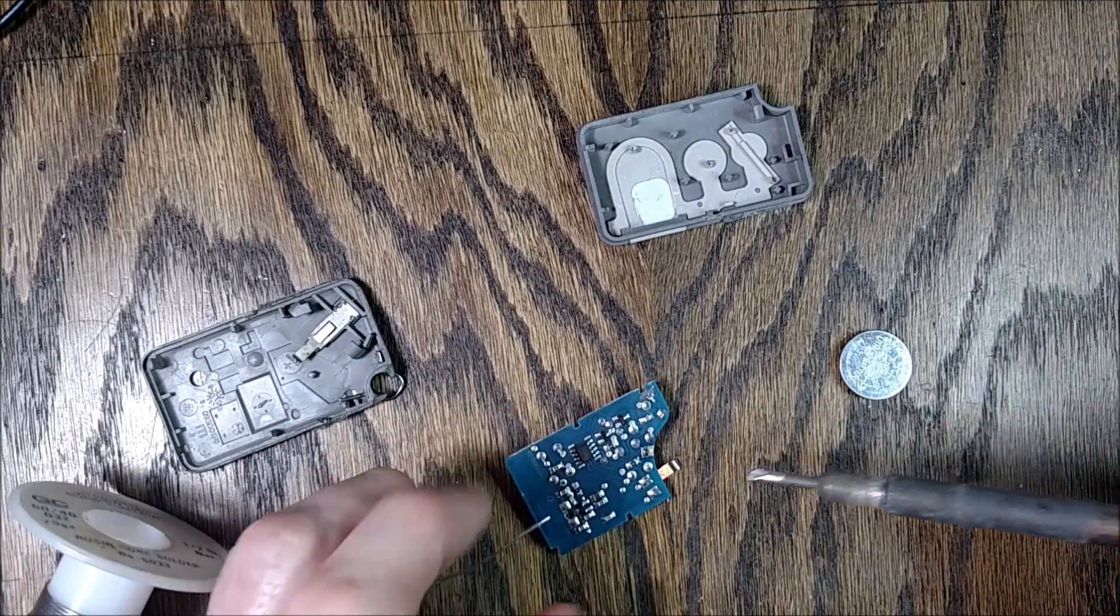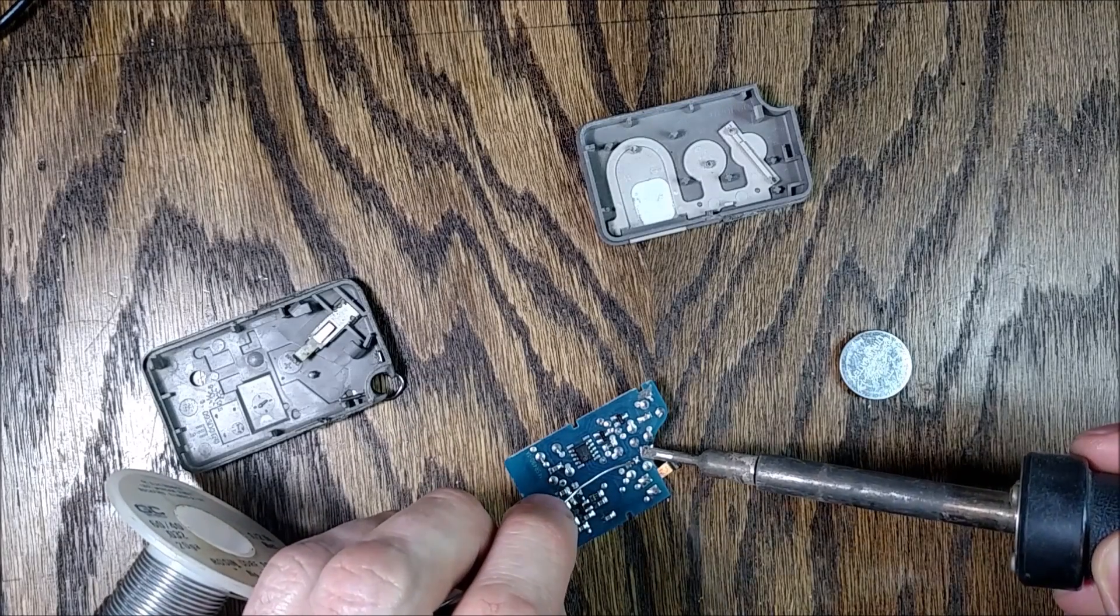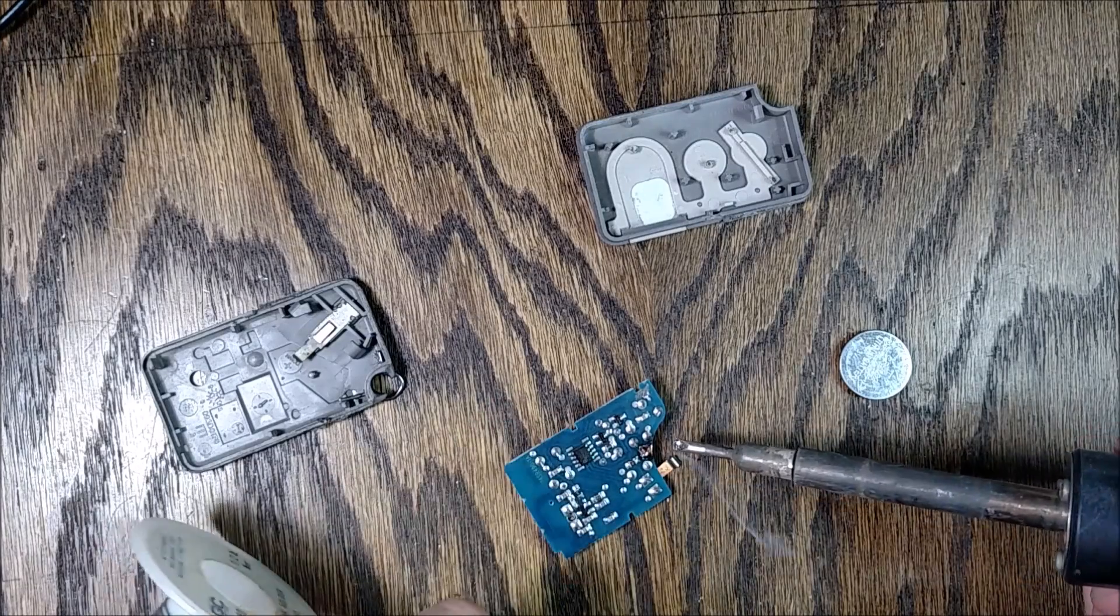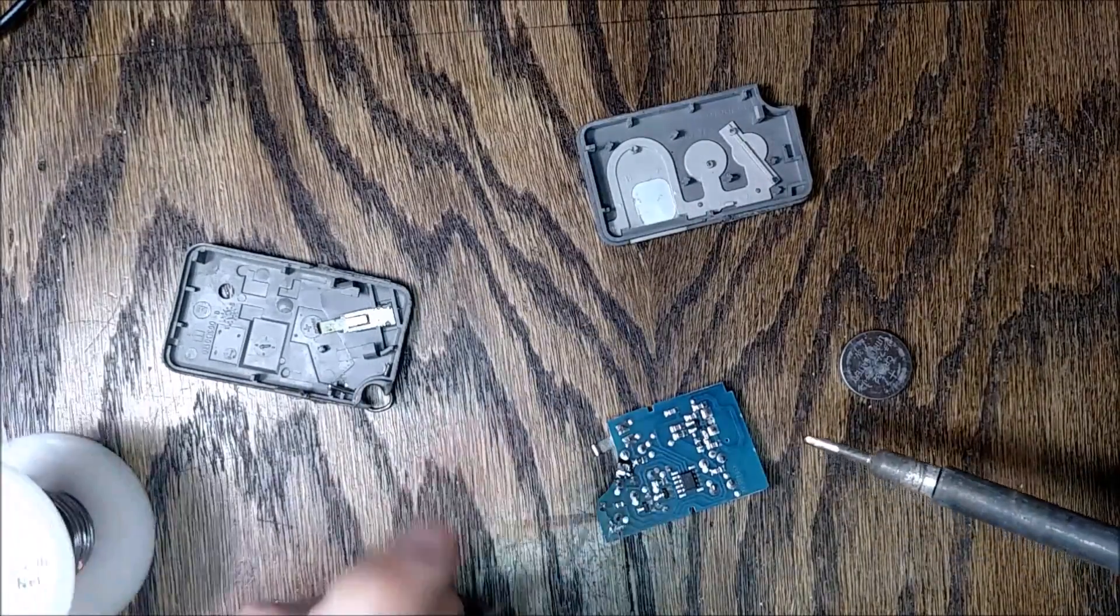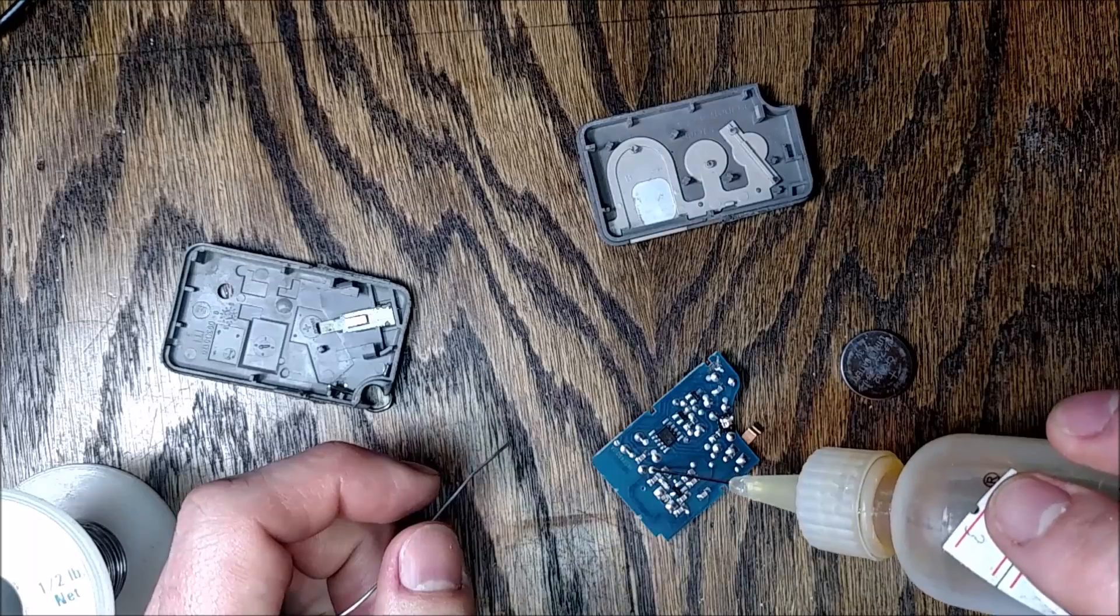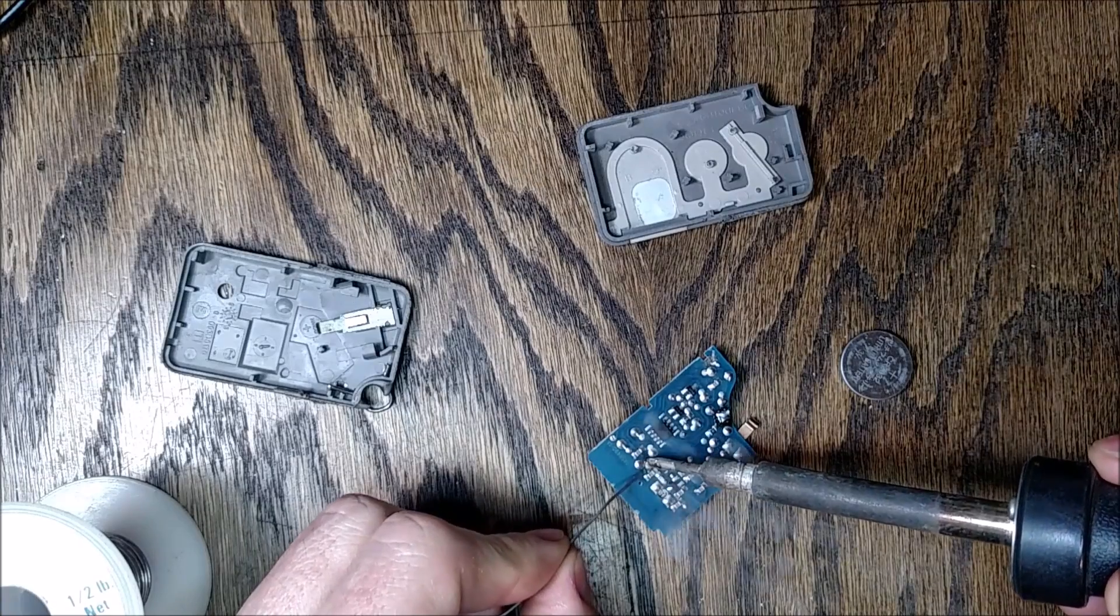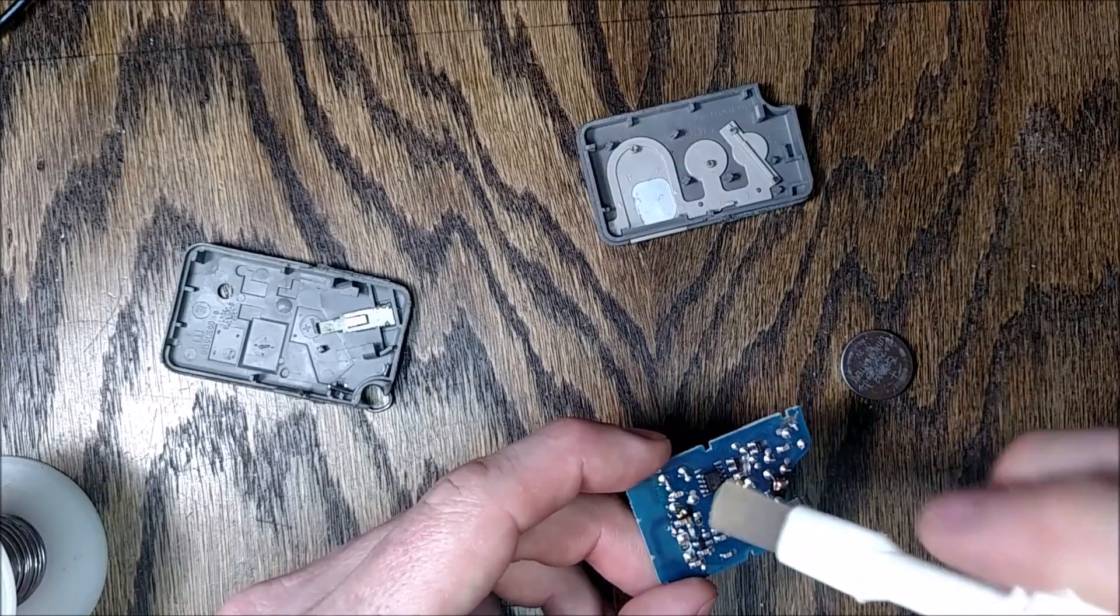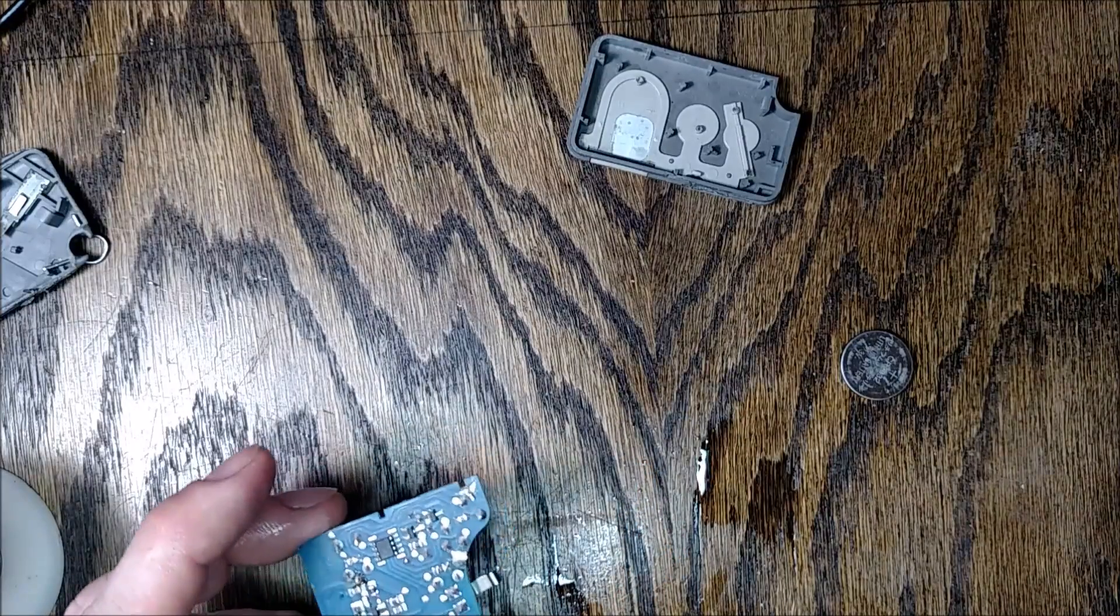So I've got the soldering iron fired up. First thing I'm going to do is reflow this pad here where the battery contact touches the circuit board, then see if I can re-solder this other bad joint while working under the camera. And we'll clean that up with some cleaner and we'll go see how that looks under the microscope.